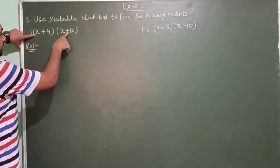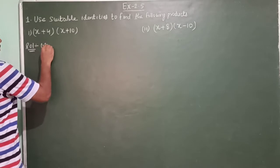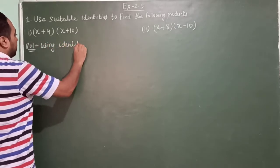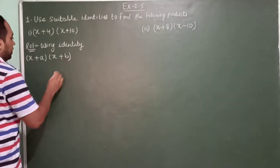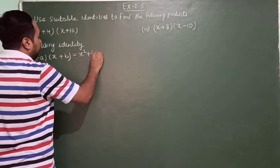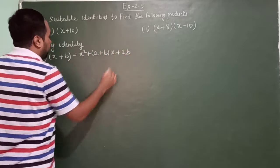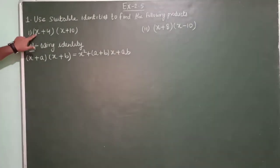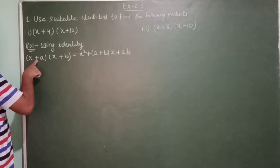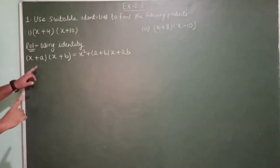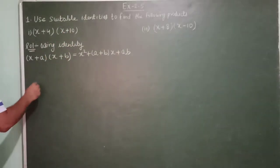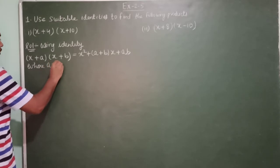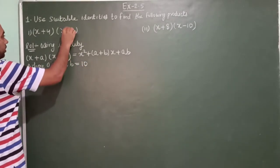We are going to use the identity x plus a into x plus b. This is equal to x squared plus (a plus b) into x plus ab. Now we compare: over here there is x, and after the positive sign there is 4, so a is equal to 4. After the positive sign there is 10, so b is equal to 10.